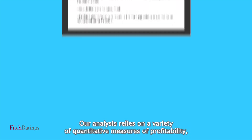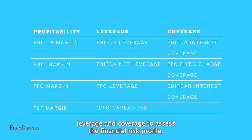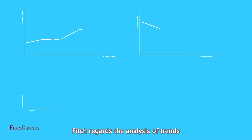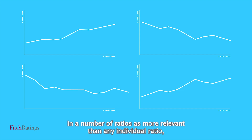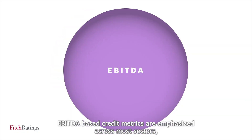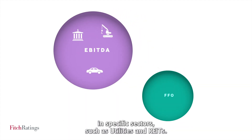The analysis relies on a variety of quantitative measures of profitability, leverage, and coverage to assess the financial risk profile. Fitch regards the analysis of trends in a number of ratios as more relevant than any individual ratio, which represents only one performance measure at a single point in time. EBITDA-based credit metrics are emphasized across most sectors, but FFO-based metrics are more relevant in specific sectors, such as utilities and REITs.